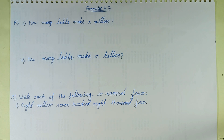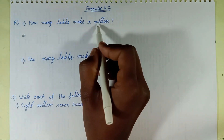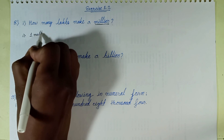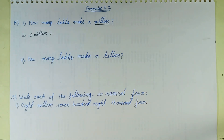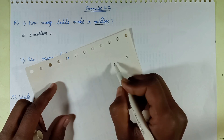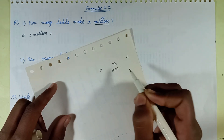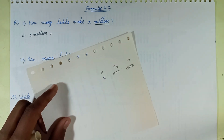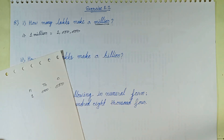Question number one: how many lakhs make a million? Let's solve it. First, write 1 million. In the international system of numeration, the first three digits come in the ones period, the next three digits come in the thousands period, and the next three digits come in the millions period. So 1 million equals 1,000,000.